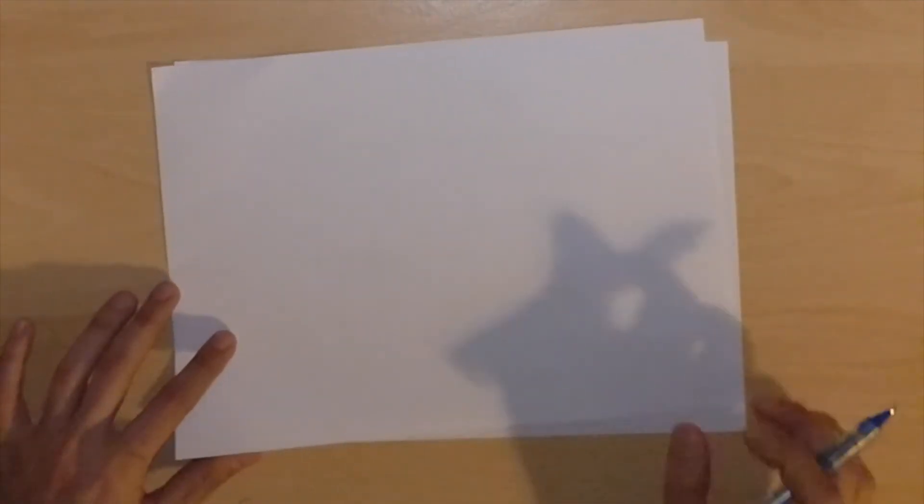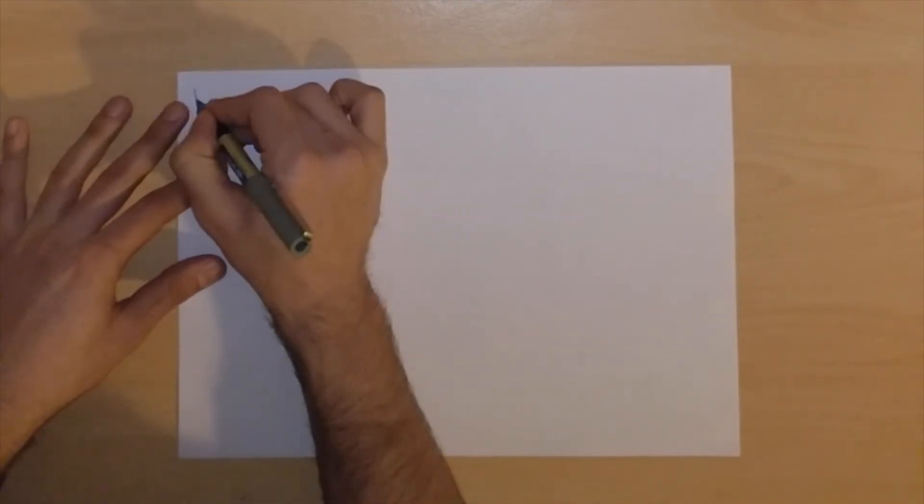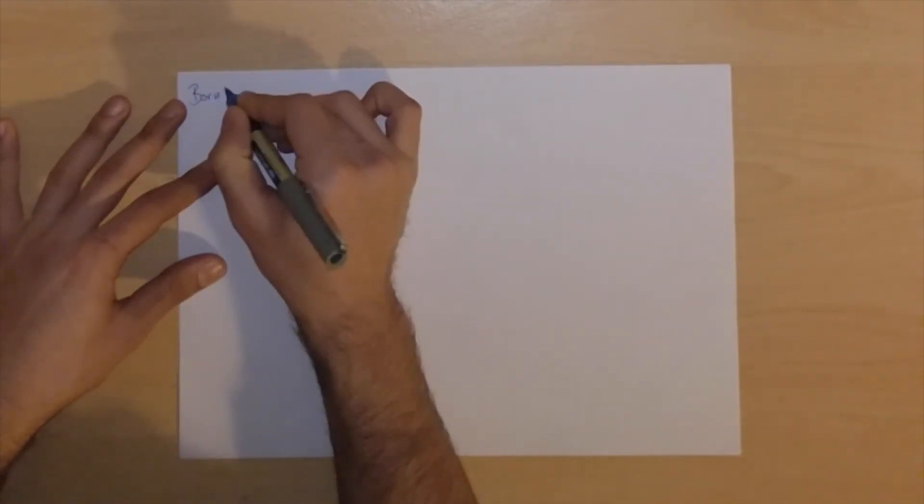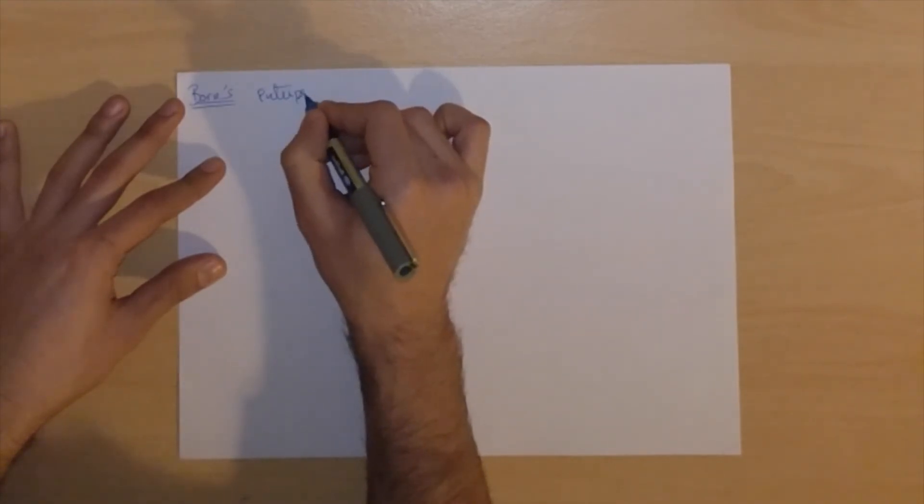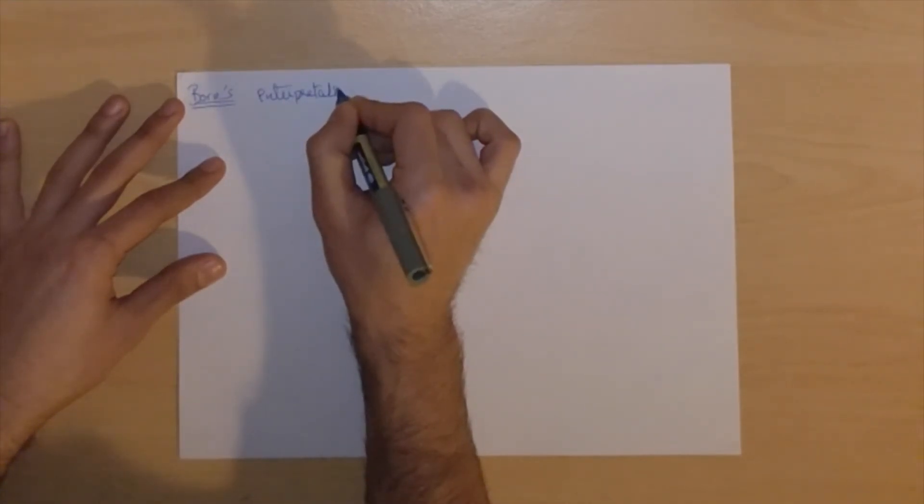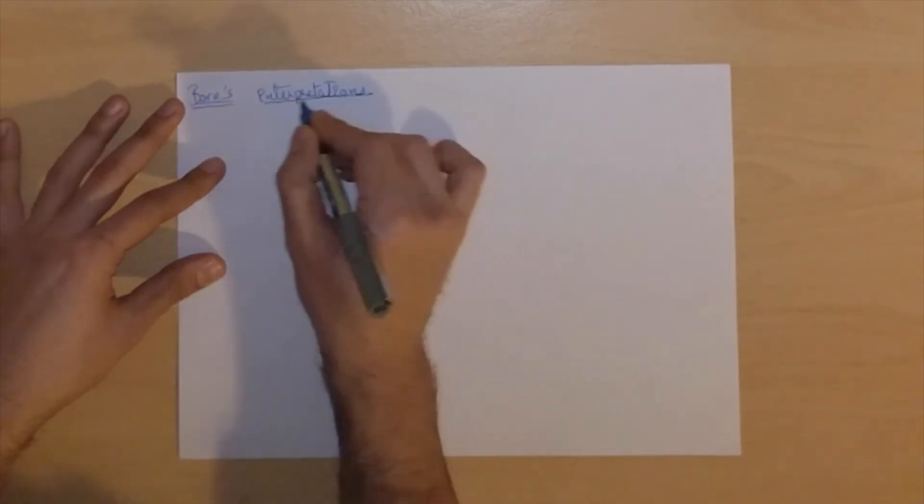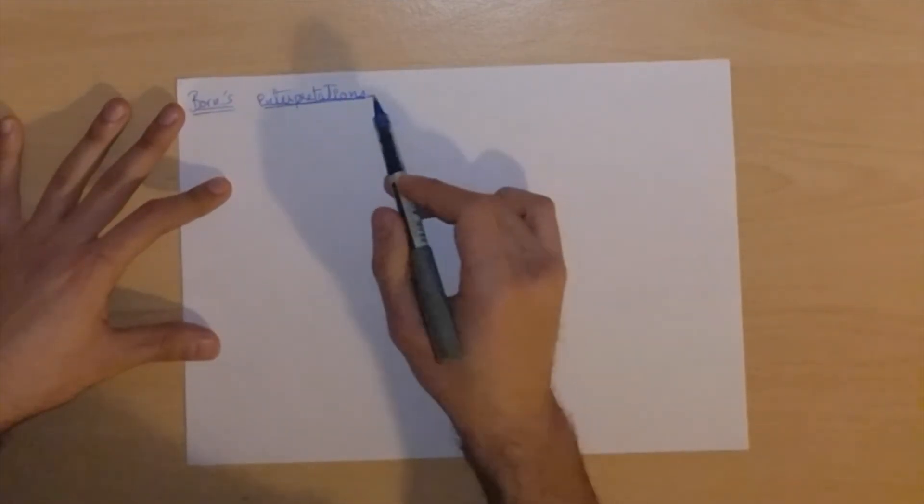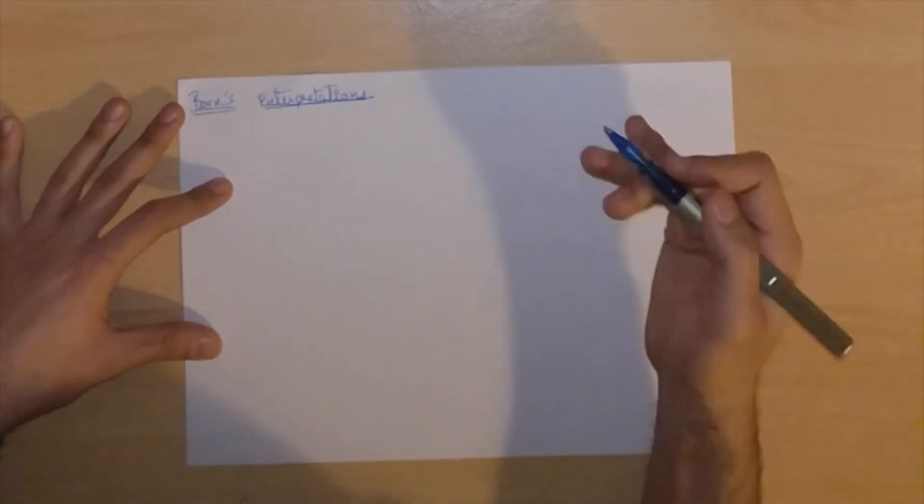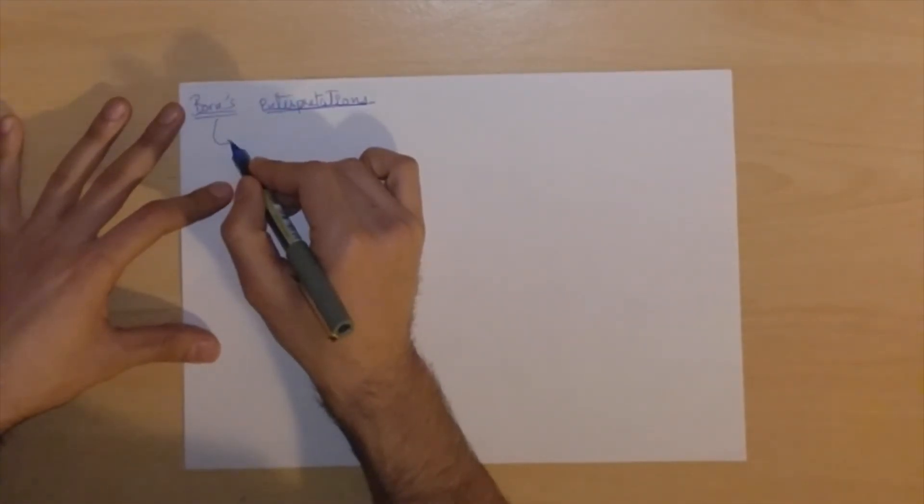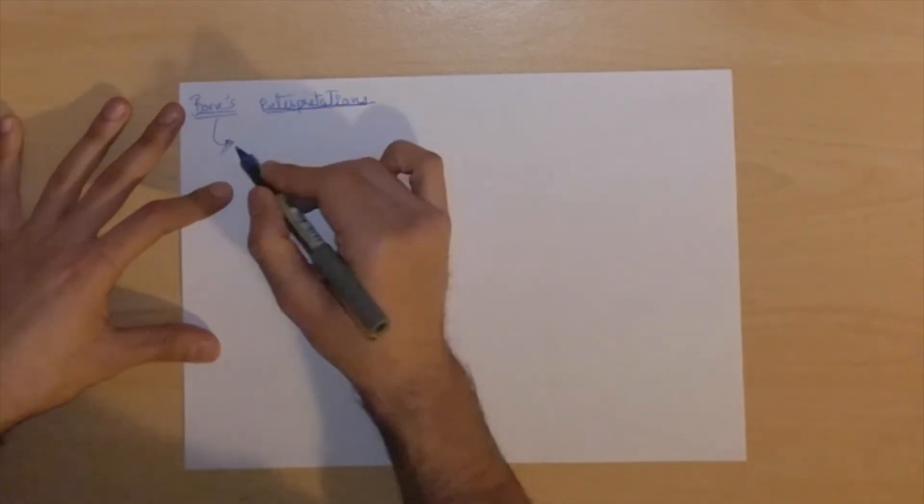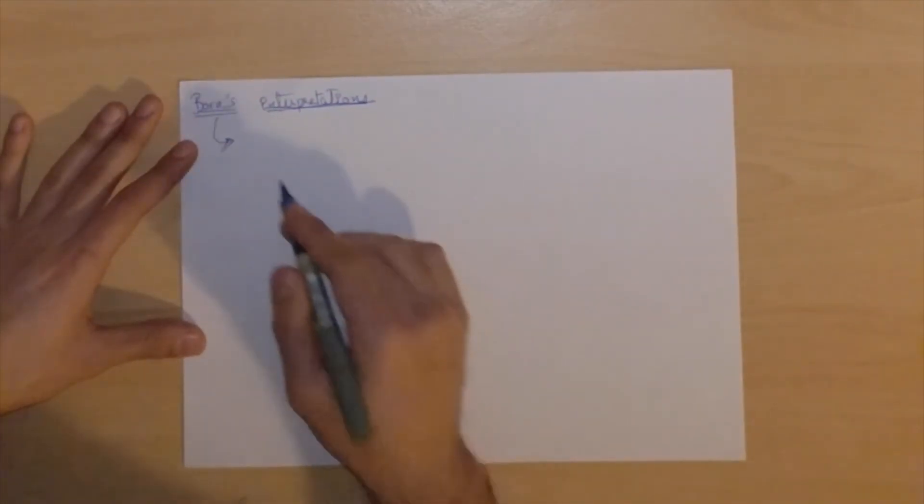So today we're going to look at Born's interpretation of the wave function. So sometimes we do need to look at interpretations, simply because it makes everything far easier. But I would like to say that there are different interpretations of what a wave function actually is, but this one's the most classically used or taught one in university, so we're going to stick to this.